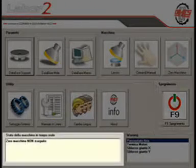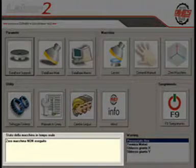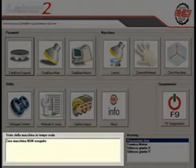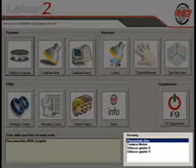In the lower part of the page are two text windows that inform the operator with simple messages whether the machine is working correctly or whether any problems have occurred.